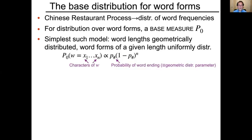The simplest such model has word lengths geometrically distributed with parameter p-hash — the probability of a word ending after any particular character. Given a particular length, word forms are uniformly distributed, so all words of the same length are equally probable. This is the simplest such model; you can do a lot of interesting things by relaxing that simplicity assumption and allowing more complexity in the distribution over word forms, but we'll just cover the simple model today.